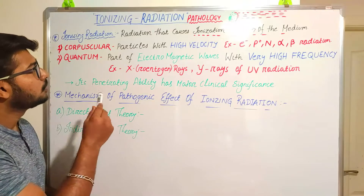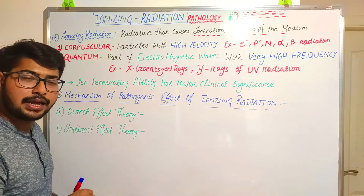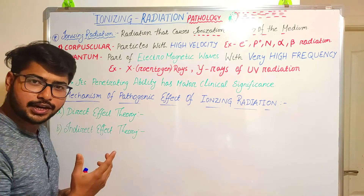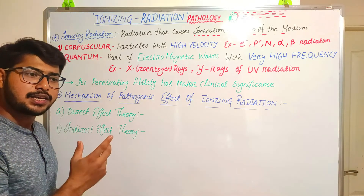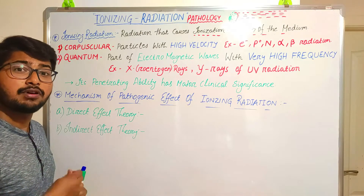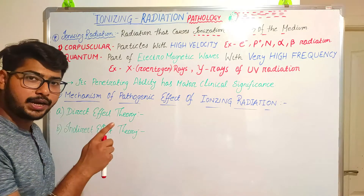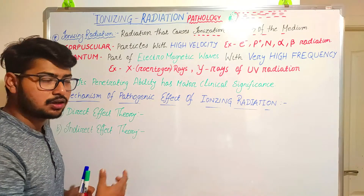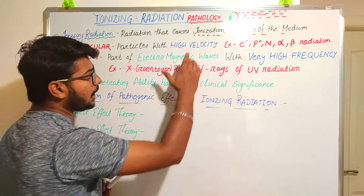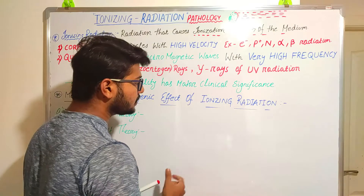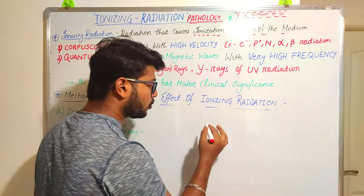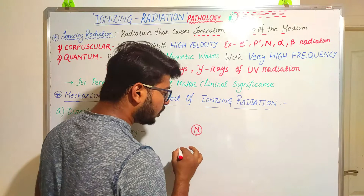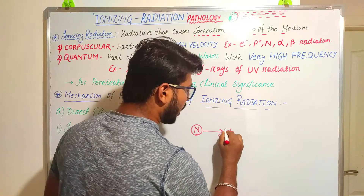We will read about ionizing radiations — what do you mean by ionizing radiations? Ionizing radiation means radiation that passes through a medium and the medium gets ionized. Ionized means the transformation of neutral particles to charged particles.